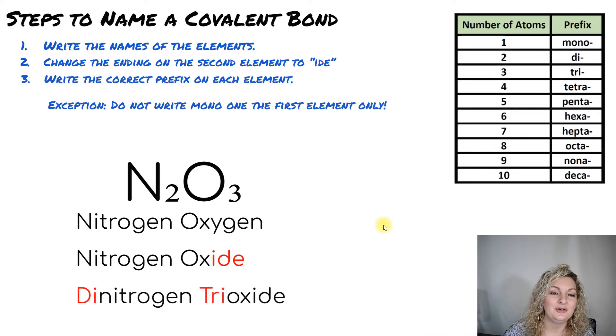And then step three, we're going to write our correct prefixes for each element. So we have two nitrogen and two is going to be di. So we put di in front of the nitrogen.